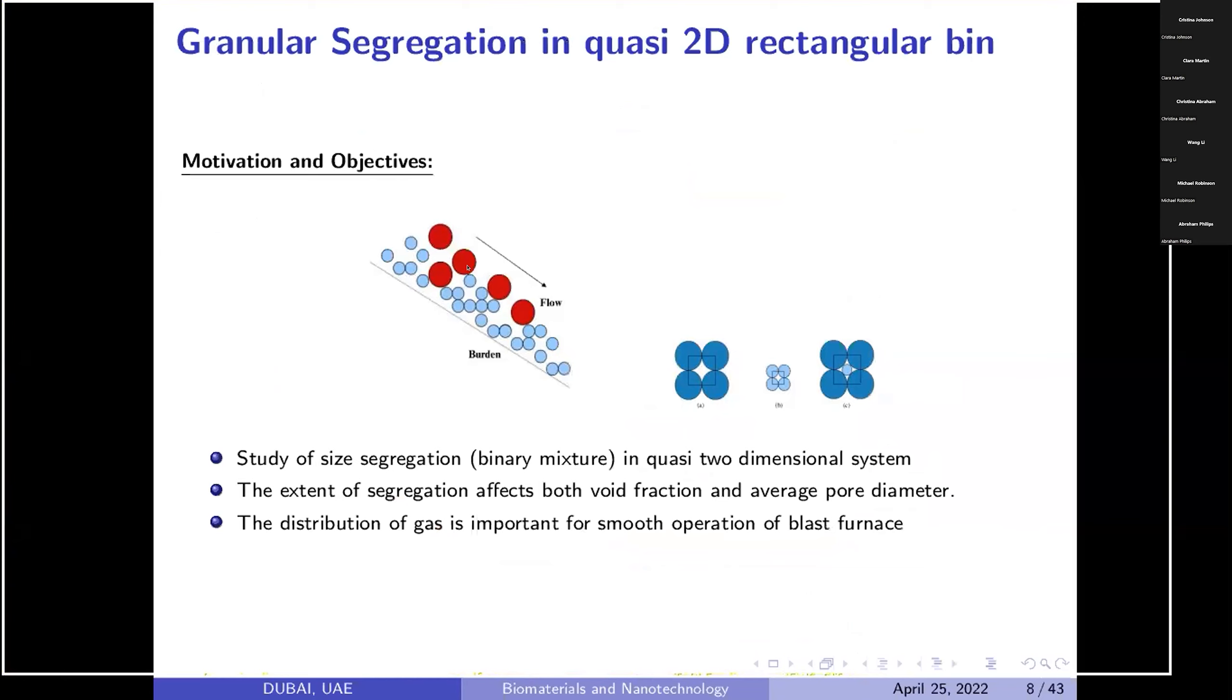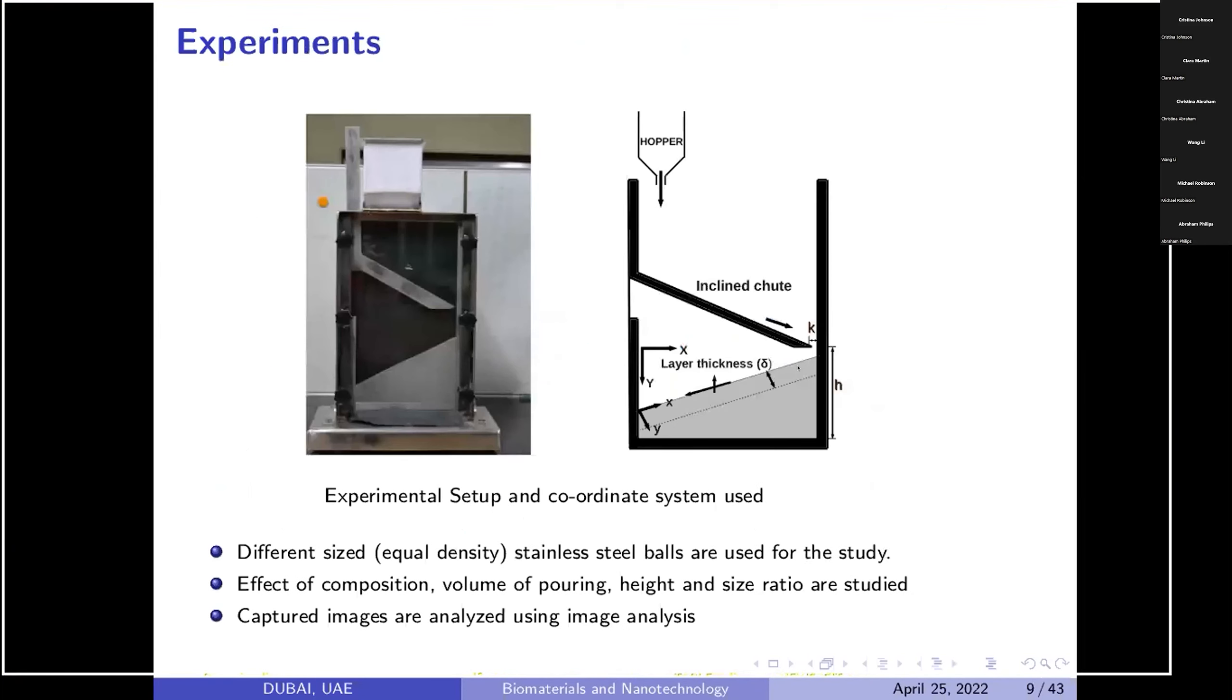During flow, what happens? The particle gets segregated. So we have all large together, small together, or either mixed. If you look at these three different conditions, we have different porosity, which in turn affects the performance of blast furnace. This is the schematic diagram of experimental setup of blast furnace.